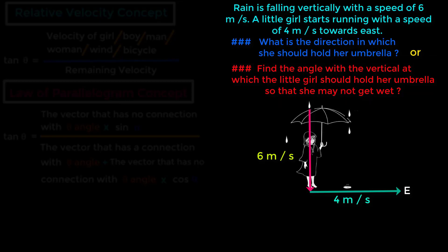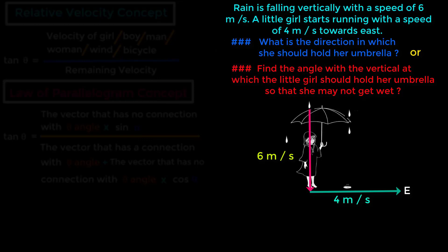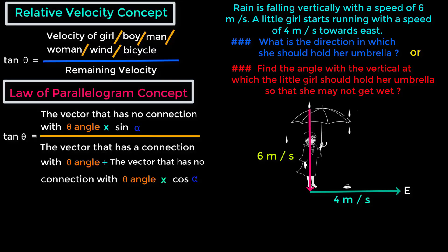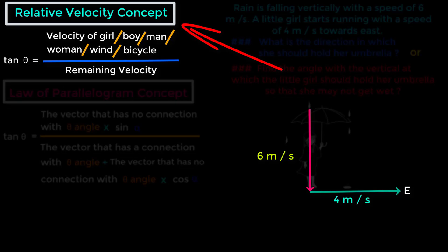You may think these two questions are different — one asks for the direction and the other asks for the angle. Actually these two questions are the same, because in physics, to find out the direction means to find out the angle.